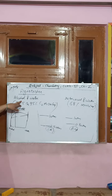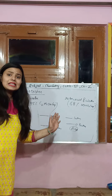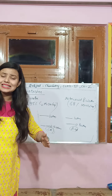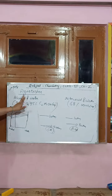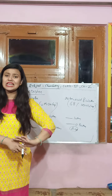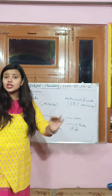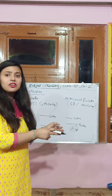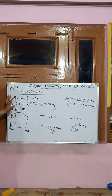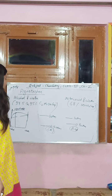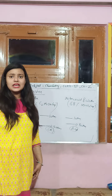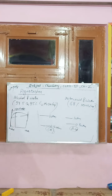Minimum boiling azeotropes are azeotropic mixtures in which the boiling point of the solution is less than the boiling points of either of the two pure liquids. Maximum boiling azeotropes are mixtures where the boiling point of the solution is more than the boiling points of the two liquids. Azeotropic mixtures showing positive deviation are minimum boiling azeotropes, and those showing negative deviation are maximum boiling azeotropes.